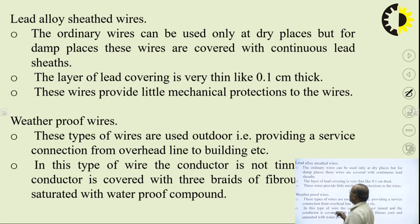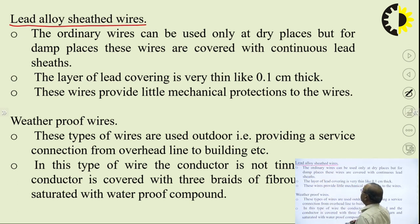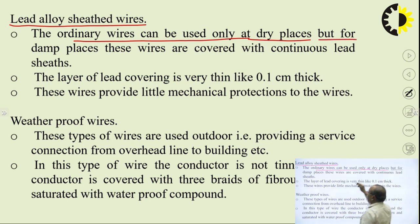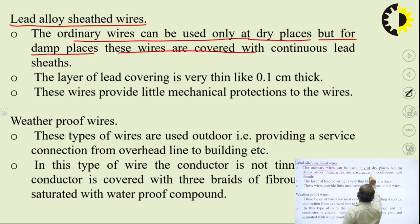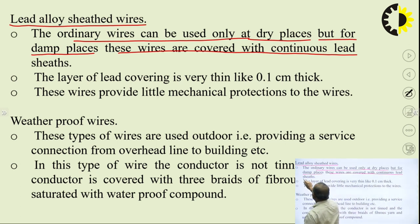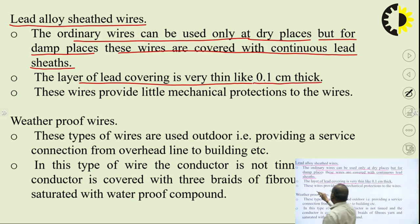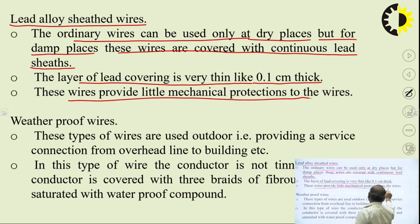The next type is lead alloy sheath wire — another type of insulation. Ordinary wires can be used at dry places where there is no or very little moisture. But for damp places where there is moisture content, these wires are covered with a continuous lead sheath so as to protect from that moisture. The layer of lead covering is very thin, in the range of 0.1 centimeter. These wires also provide some mechanical protection.